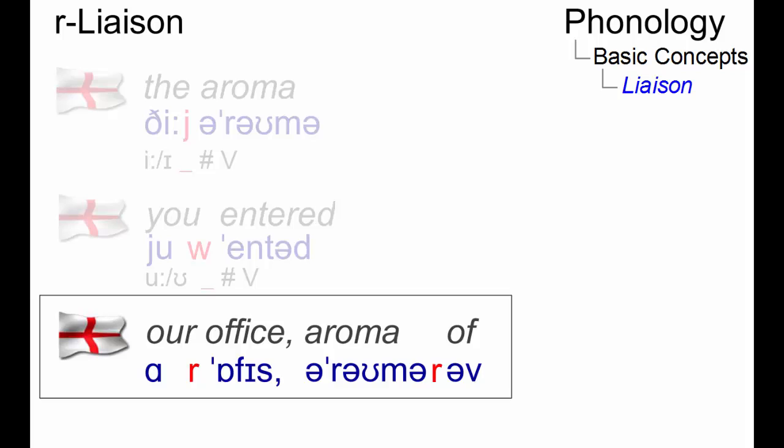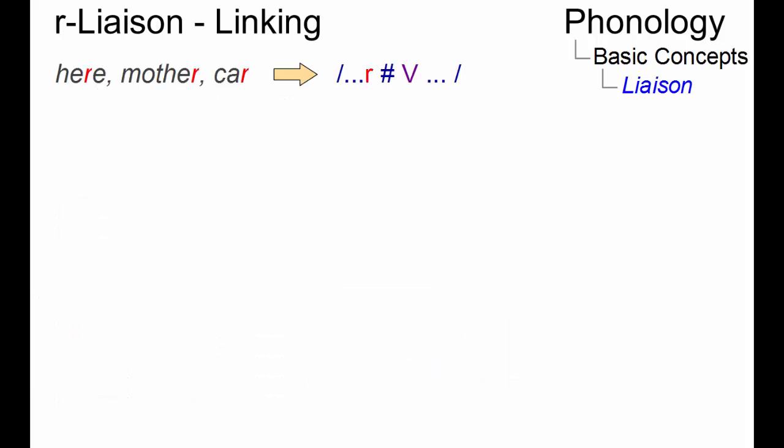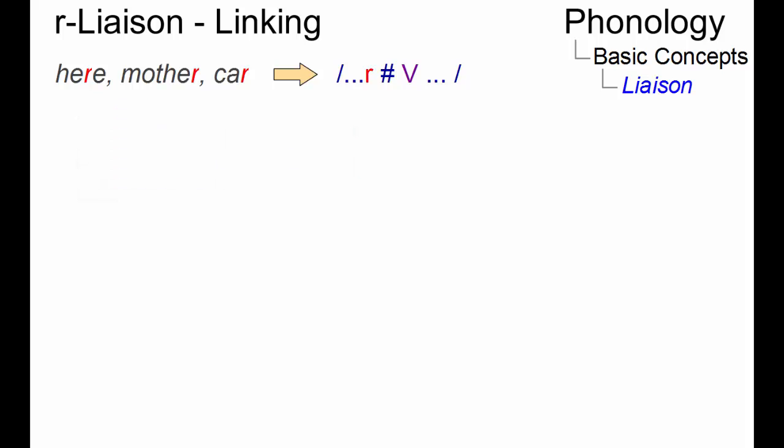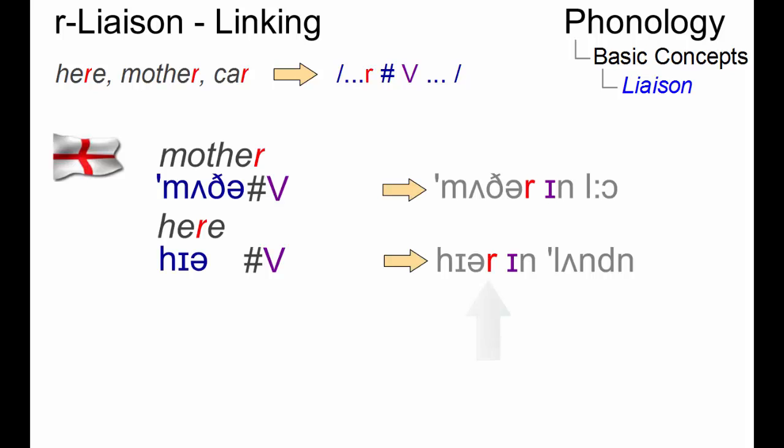There are two variants of R-liaison in present-day English. In cases of linking, an orthographically present and phonemically final post-vocalic R is pronounced when the next word starts with a vowel. So we get cases such as 'here in London.'